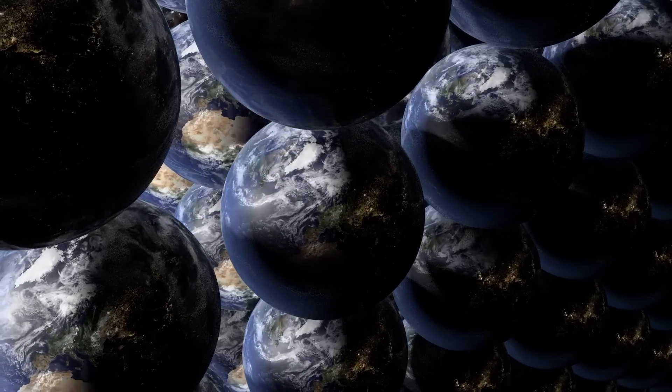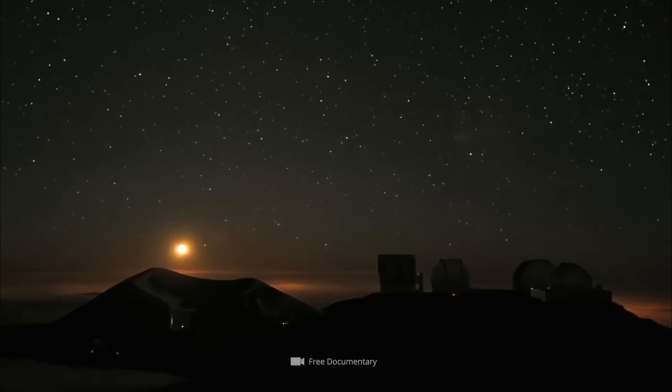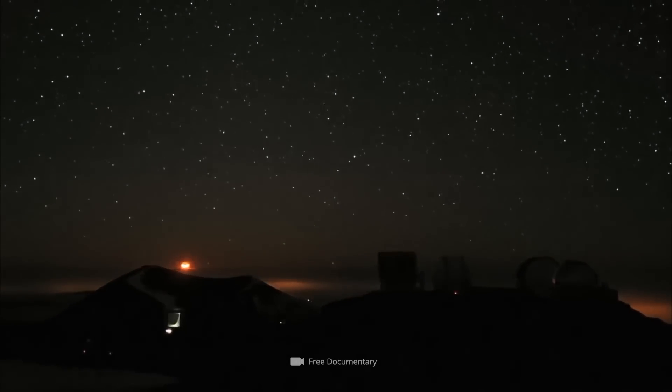This would be like 14 Earths in a row, all orbiting the Sun in similar orbits. This is highly unlikely from gravitational forces alone. Astronomers know that planets in almost all systems are very far apart.